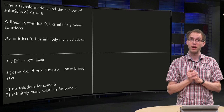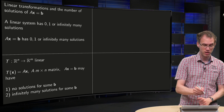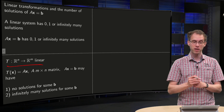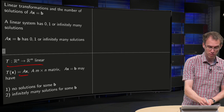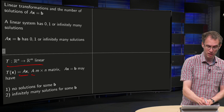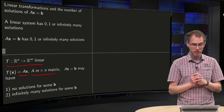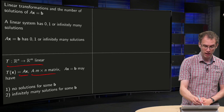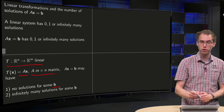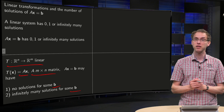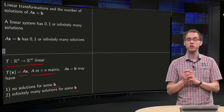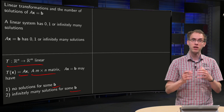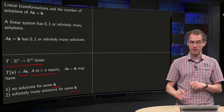What does this mean for the equivalent linear transformation? If you have t from Rn to Rm, linear, given by t(x) equals A times x, where A is some m times n matrix, then we consider the cases where Ax equals b has no solutions for some b, or infinitely many solutions for some b. The one-solution case we will deal with later.